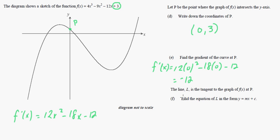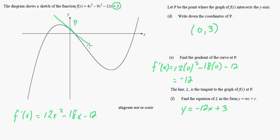The line L is the tangent to f(x) at P. Find the equation of L. We have the gradient, which is M = negative 12, and the y-intercept, which is C = 3. So this would just be y equals negative 12x plus 3. That's the tangent line at that point.